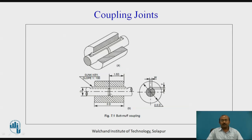Butt muff coupling: 'butt' means the two abutting surfaces of the shafts are touching each other, and 'muff' means it is covered with a particular piece of metal — a hollow piece like a pipe. These two ends of the shafts are touched to each other and a key is introduced from both ends. You can see the two shafts, the muff, the side view, and the hatched portion in the side view represents the shaft. The coupling element is engaged with the shaft by means of keys. The next type is the half-lap muff coupling, where the shaft ends overlap each other — the shaft end is cut to half of its diameter — providing better co-linearity and more efficient power transmission.